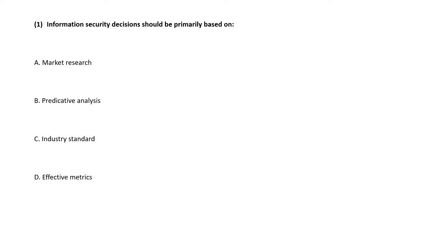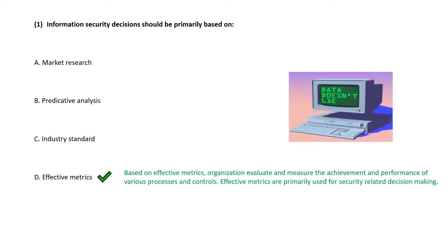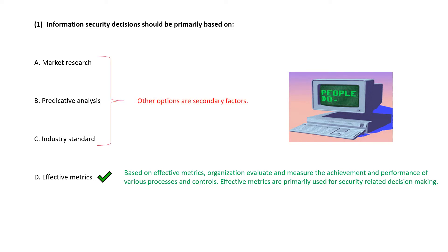Question 1. Information security decisions should be primarily based on — correct answer is option D, that is effective metrics. Effective metrics are primarily used for security related decision making. Other options are secondary factors.